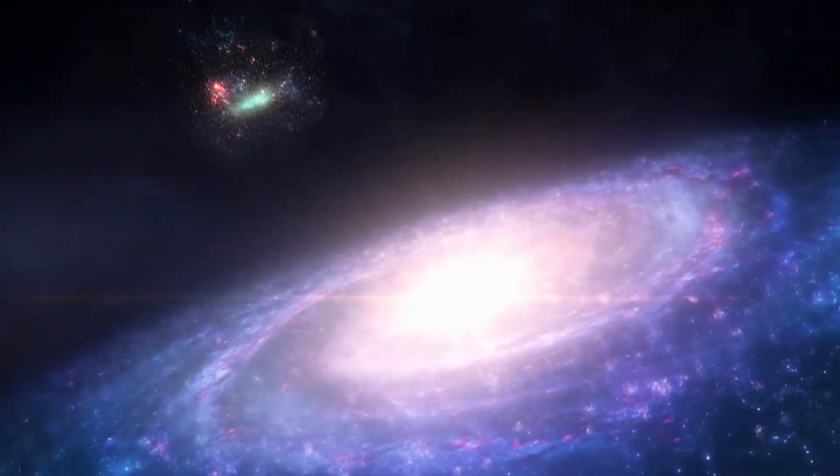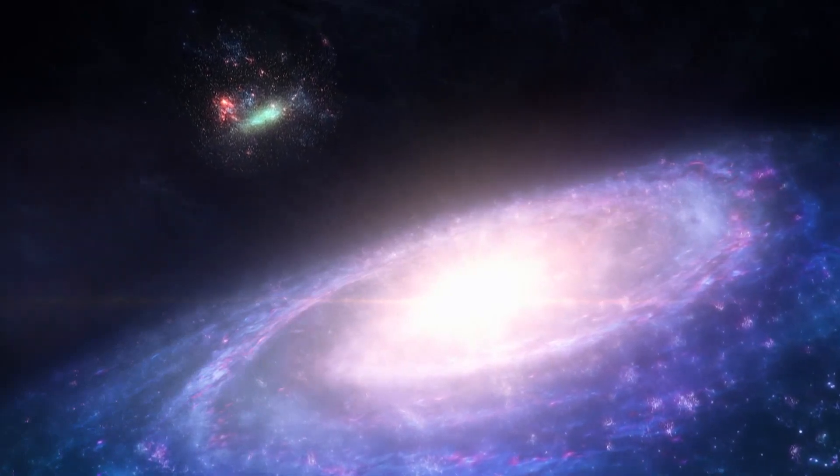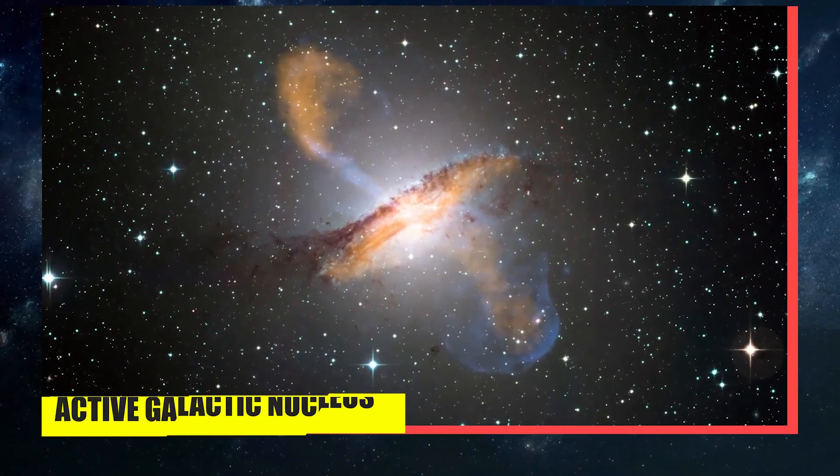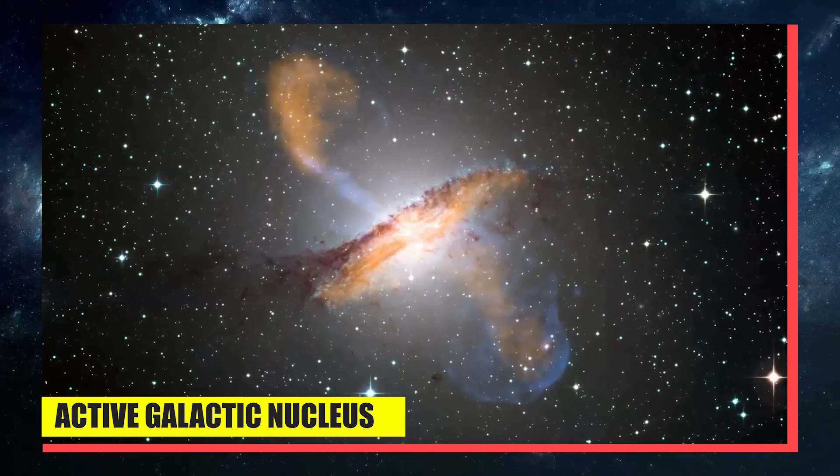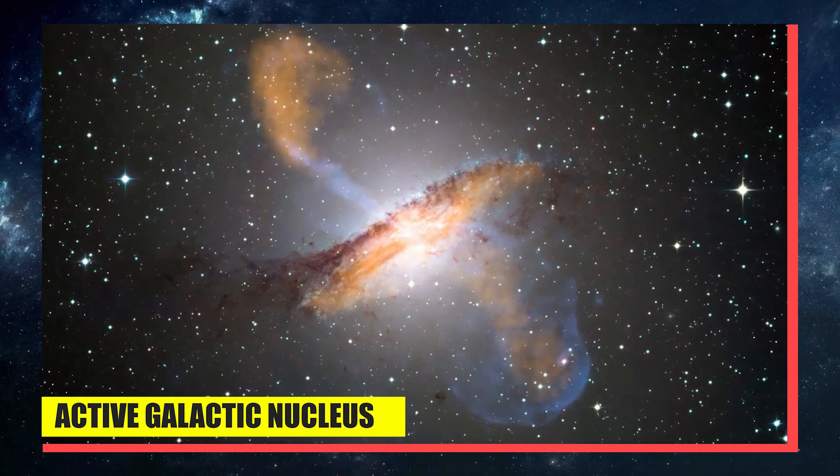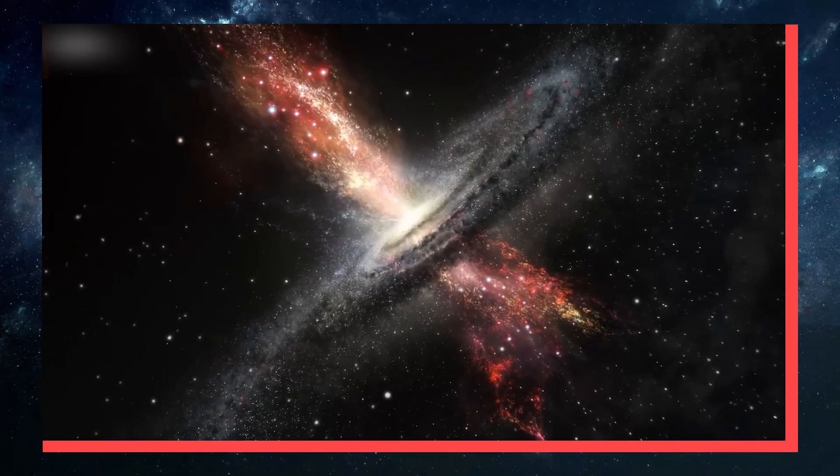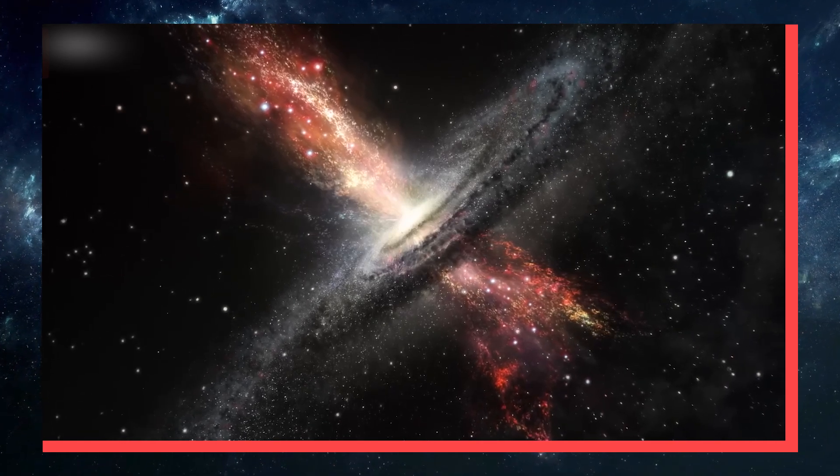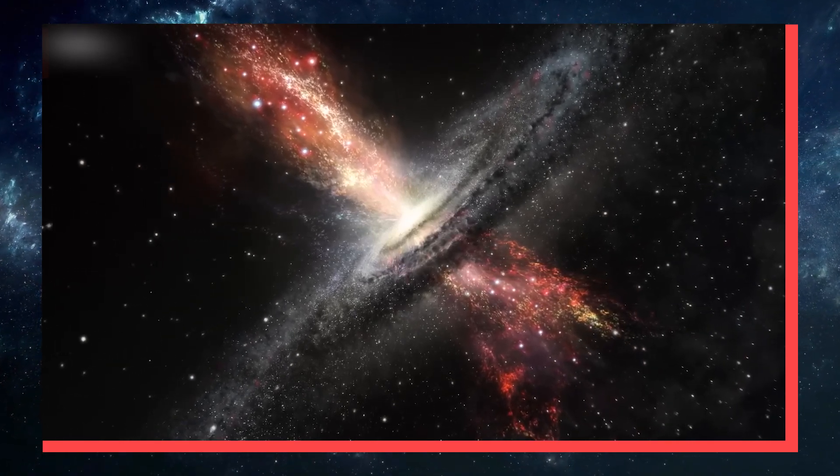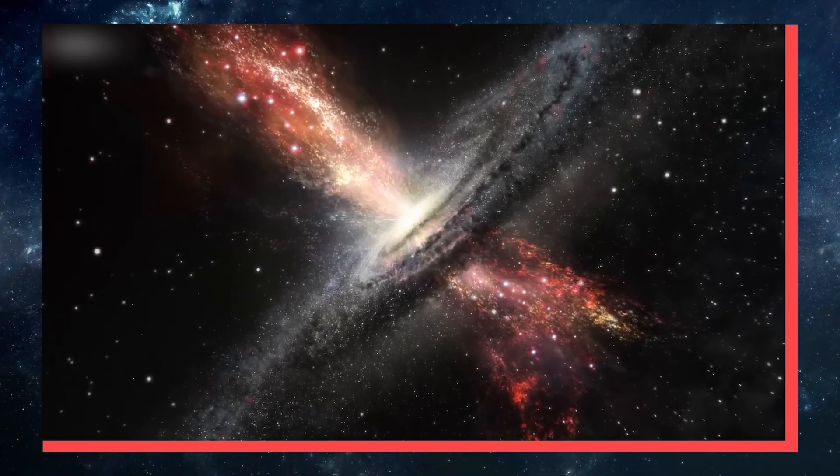Every new discovery propels us further into understanding the cosmos's earliest days and its most bizarre residents. Did you know that a previously presumed radio galaxy turned out to be a black hole, hurling radiation at nearly light speed and directly at us? This tremendous black hole, nested in a far-off galaxy, bewilderingly adjusted its angle by an astonishing 90 degrees, now launching its mighty particle jets at Earth.